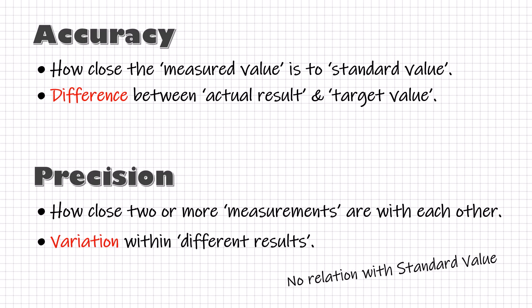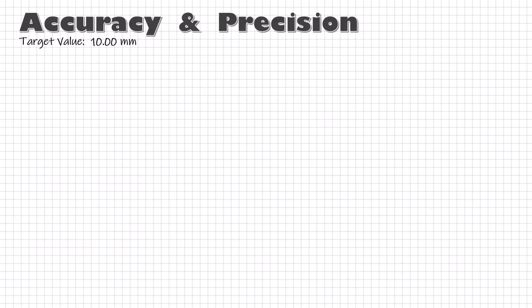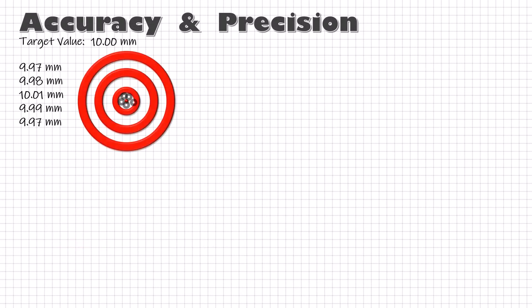Point to remember: accuracy and precision are independent of each other. Suppose the five measured values are all close to the target and all close to each other — the process is both accurate and precise.